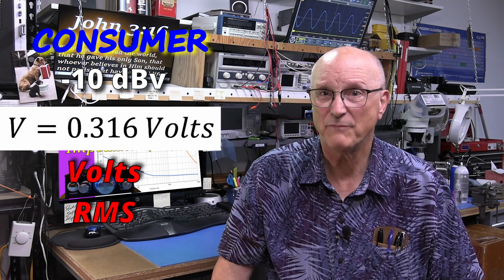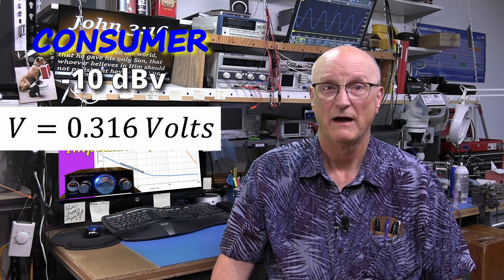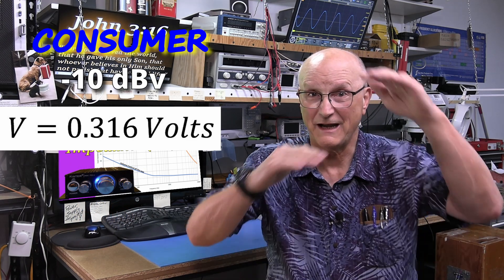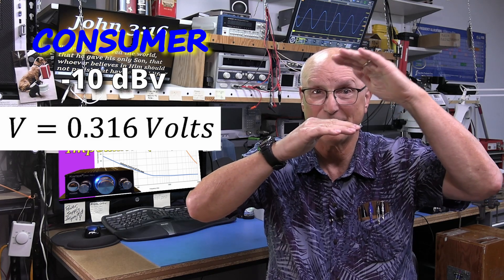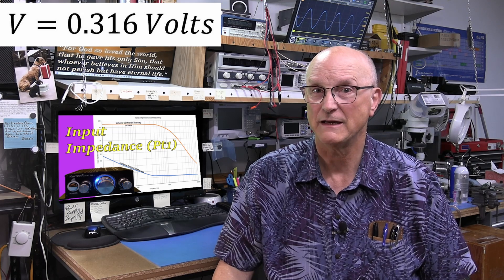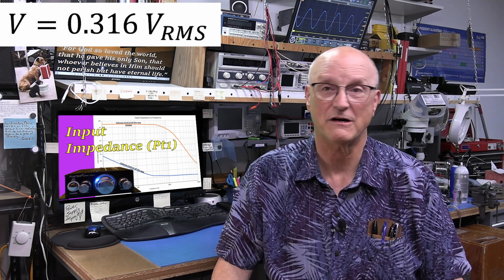That is kind of hard to measure on an oscilloscope. I prefer volts peak to peak for this. It is a lot easier to line up my gradicals on the screen that way. So the next step for me is to convert this volts RMS into volts peak to peak.